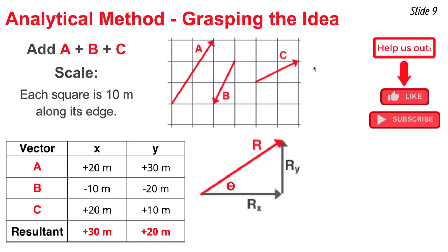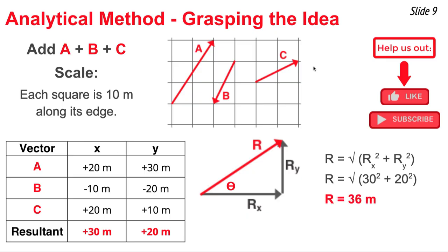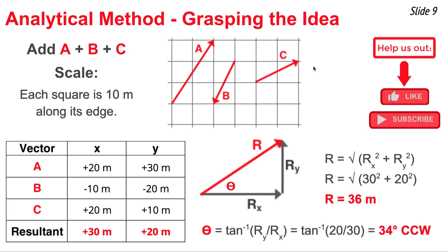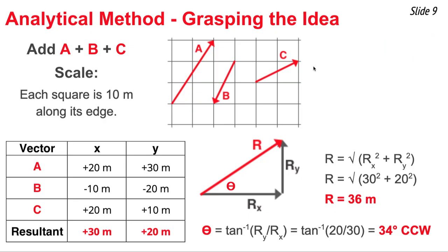I draw the two resultant components in head-to-tail fashion and draw the resultant as the hypotenuse of the right triangle. To find the magnitude of R, I use the Pythagorean theorem, substituting 20 and 30 for x and y, and get 36 meters. To find the direction, I use the tangent function: theta equals the inverse tangent of the side opposite divided by the side adjacent, which gives inverse tangent of 20 over 30. The result is 34 degrees, so the resultant is 36 meters at 34 degrees counterclockwise from east.